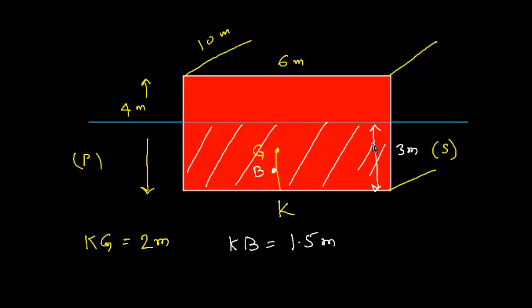This is a simple example explaining the concepts of center of buoyancy and center of gravity when looking at the ship in the transverse direction. The same concept can be explained when looking at the ship in the longitudinal direction as well.